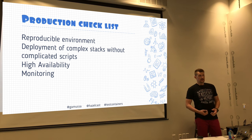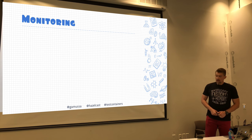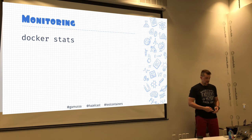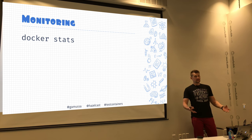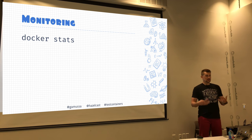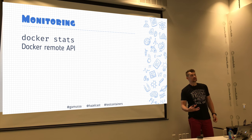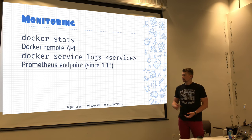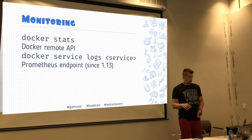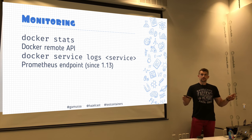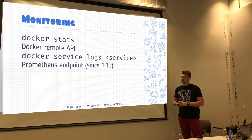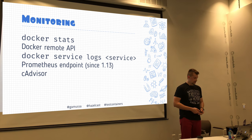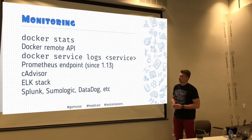Monitoring in production is important. Docker stats gives visibility into individual containers — memory consumption and resource allocations. Docker daemon exposes a remote API. Starting from Docker 1.13, it has a Prometheus endpoint for collecting time-series data, which integrates with other systems for monitoring and visualization. The ELK Stack and vendor-specific tools are also available.